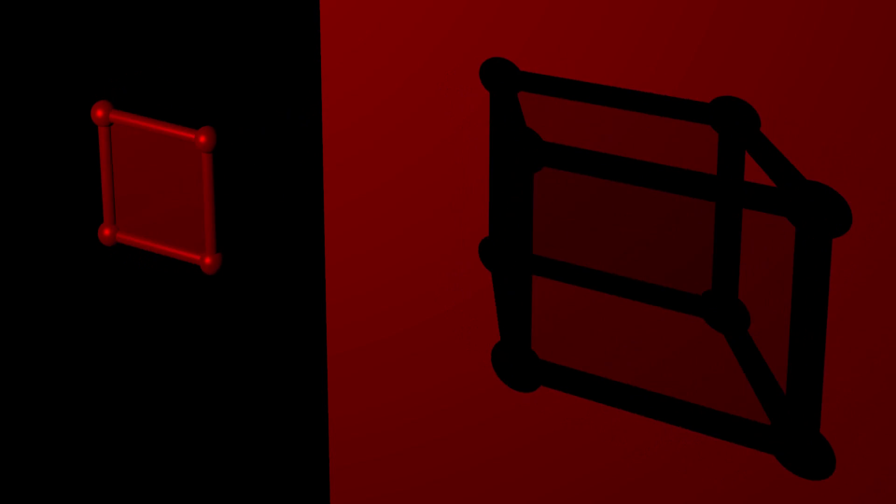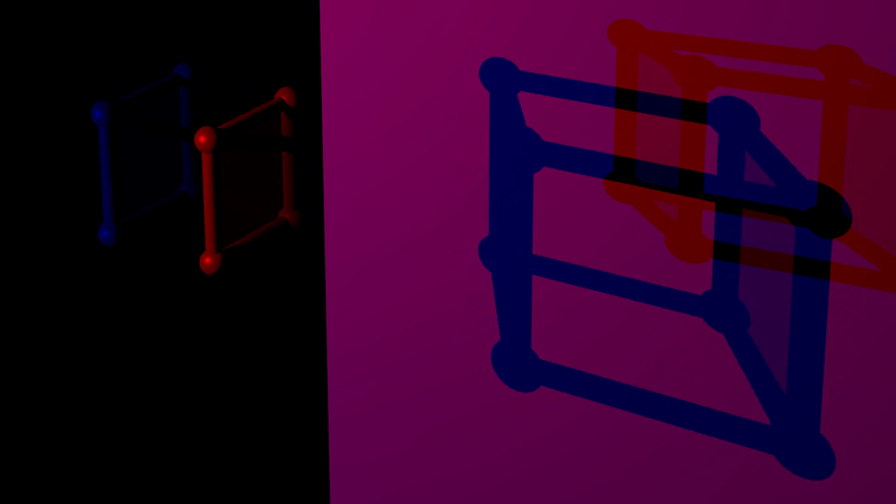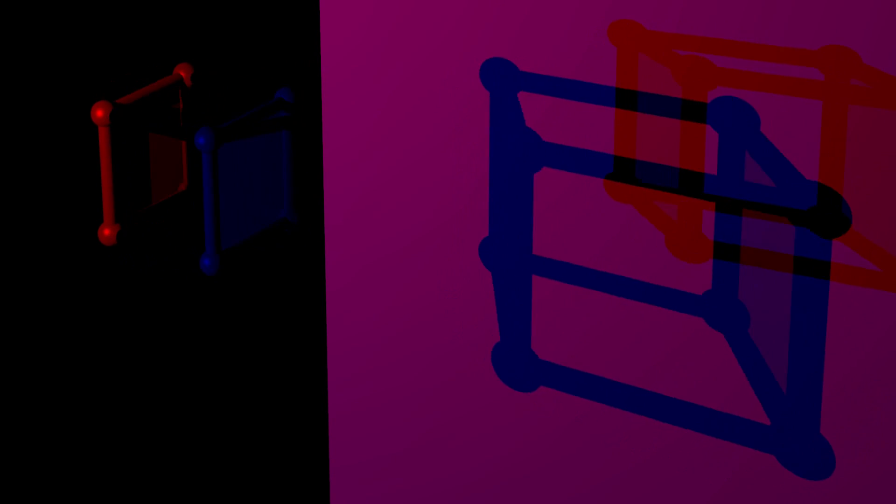Let us now add a blue light, which makes the blue parts of the cube visible because they reflect blue light. The shadow behind the red light now appears blue, because the blue light is able to reach this part of the screen, but the red light is blocked by the object.